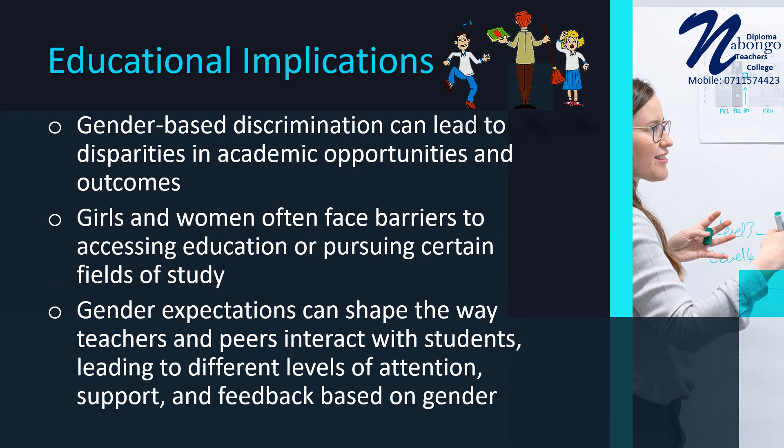Educational implications: gender-based discrimination can lead to disparities in academic opportunities and outcomes. Girls and women often face barriers to accessing education or pursuing certain fields of study. For example, girls may be discouraged from pursuing careers in science, technology, engineering, and mathematics — STEM fields — due to stereotypes and societal expectations. Gender expectations can also shape the way teachers and peers interact with students, leading to different levels of attention, support, and feedback based on gender.